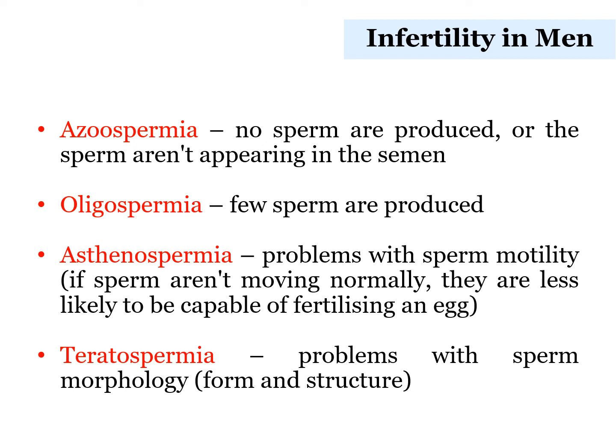Abnormal sperm may affect male fertility and cause difficulties in having babies. There are some common infertility conditions in men. Azoospermia is when there is an absence of sperm. Oligospermia is when only a small number of sperms are produced. Sperms may also not be moving normally, which is known as asthenospermia. If the issues are in sperm morphology, then it is termed as teratospermia.